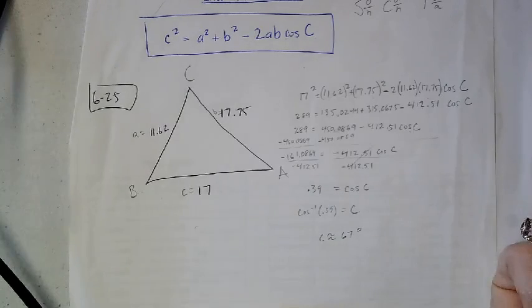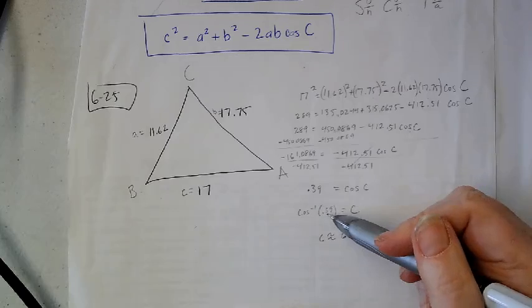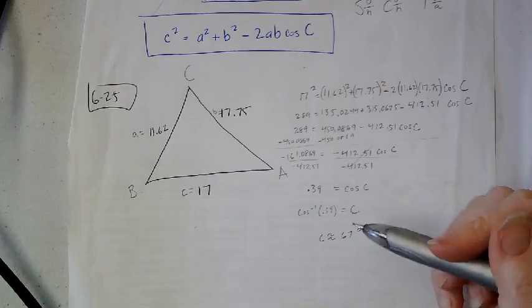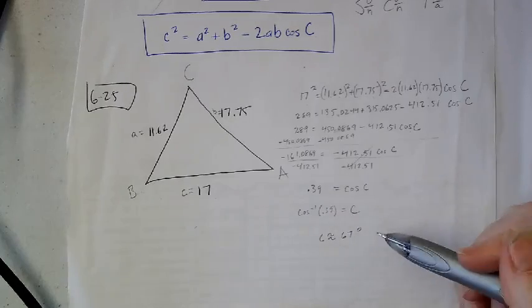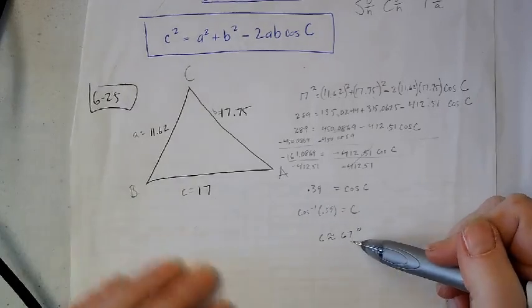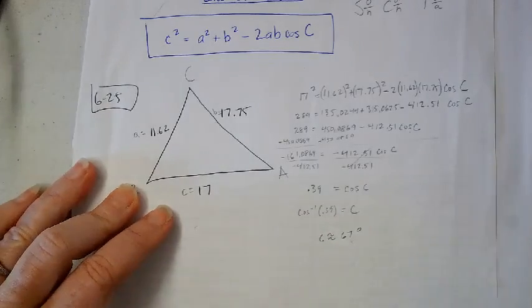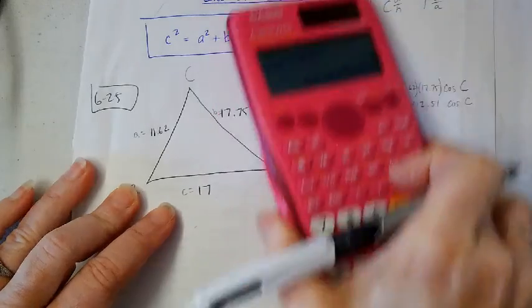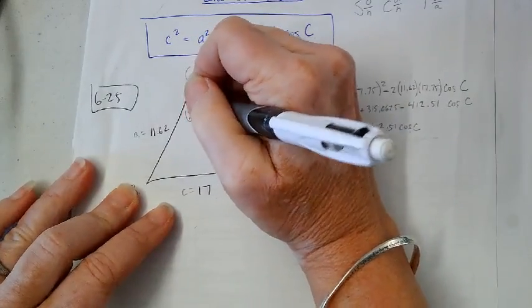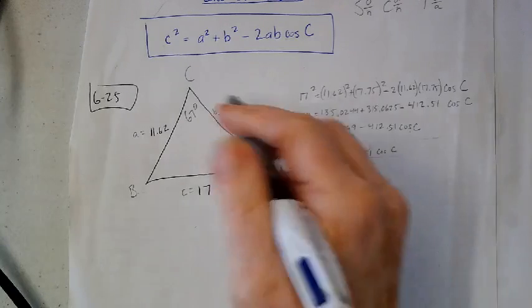I end up with this decimal that's equal to cosine C. Then I can get C by itself by inverse cosine on both sides. So I put that 0.39 into my calculator, went cosine inverse, and got about 67 degrees. It was 67.0141, so I'm just going to call it exactly 67.